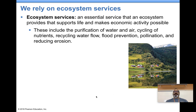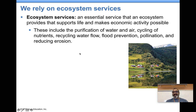Ecosystem services come up a lot throughout the year — in several chapters of your book. These are things we get for free because of the environment and the ecosystems around us. For example, purification of water happens as water percolates through rocks. Plants and trees take in air pollutants and help purify them. Nutrients get cycled. Flood prevention, pollination for our fruits and vegetables, and erosion reduction on hillsides are all ecosystem services we get from the living and non-living things around us.